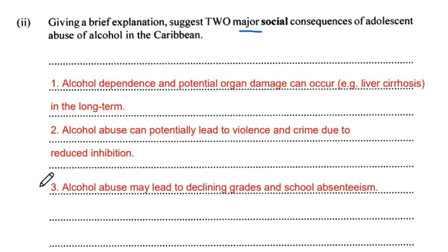Let's look at Question 4 — a glycolysis question worth six marks, so detail is important. Glycolysis actually produces four ATP at the end, but it takes two ATP to start the process, so there is only a net gain of two ATP molecules. There are also two NADH molecules produced through glycolysis. NADH is a reduced form of NAD — think of it as a catcher's mitt holding a hydrogen ion — and it can release that hydrogen ion to produce energy, for example in the electron transport chain.